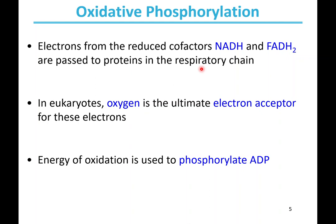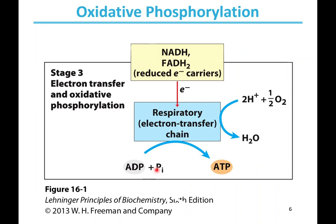The electrons stored in NADH and FADH2 are going to be passed to proteins in the respiratory chain. In eukaryotes, oxygen is going to be the ultimate electron acceptor for those electrons. The energy from these oxidations of reduced fuels is used to phosphorylate ADP. We have these electrons from our reduced carriers being transferred to the respiratory chain, also referred to as the electron transport chain. Those electrons ultimately convert oxygen into water — that's why we need to breathe oxygen, to keep this whole process going — and that transfer of electrons is ultimately used to create ATP.